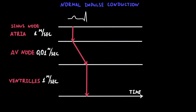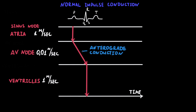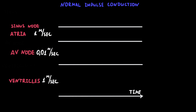When the impulse enters the ventricles, the conduction speed again becomes higher — up to 1 meter per second — so we again draw a vertical line, just like in the atria. The ECG strip shows the QRS complex at this time. This normal direction of impulse going from the sinus node down through the atria, AV node, and ventricle is called anterograde conduction. When the heart stimulus goes in the opposite direction — from the ventricles through the AV node to the atria — it is called retrograde conduction.